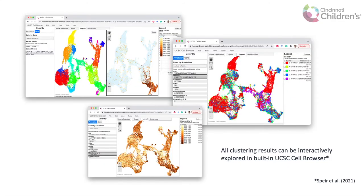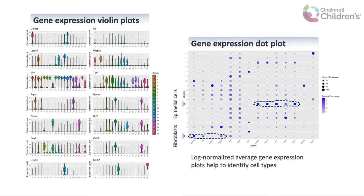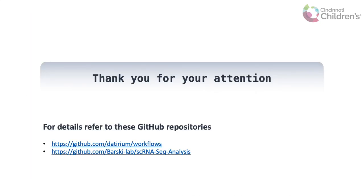On this slide, we can see the main clustering results visualized in the built-in UCSC cell browser. It allows us to interactively explore clusters, main QC metrics, assign cell types, and gene expression levels. Additionally, our clustering pipeline generates violin and dot plots for specific genes of interest. By evaluating the expression of those genes, we can manually assign and validate cell types for each of the identified clusters. As a starting point, we also generate a table of all gene markers for all clusters. That data can be used for cell type assignment as well. Thank you for your attention. If you have any questions, please refer to our GitHub repositories.